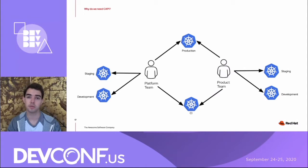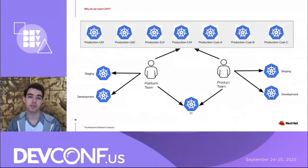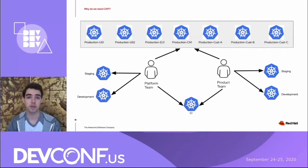Because the platform team are also developing software, they want their own development environment so they don't break the product team, plus a staging environment and a CI cluster. As you can see, we're already getting more and more Kubernetes clusters across just two teams. As the software takes off, customers want to run the product in different regions - say for data protection laws within Europe or China. Or perhaps the clusters are getting too big, so the Awesome Software Company decides to split a cluster in two. The number of Kubernetes clusters can grow rapidly.